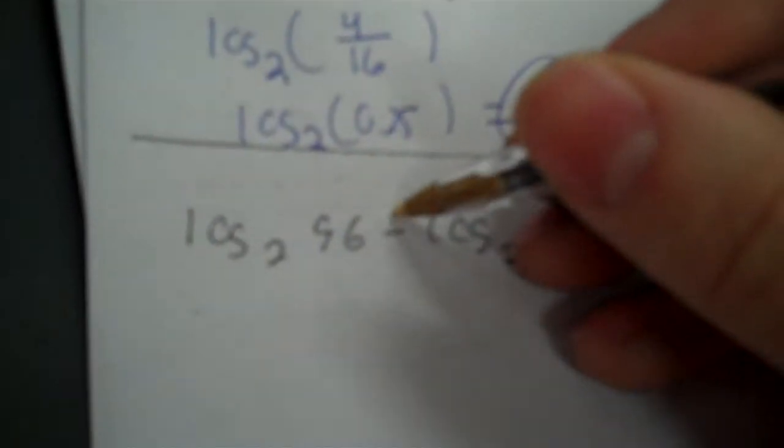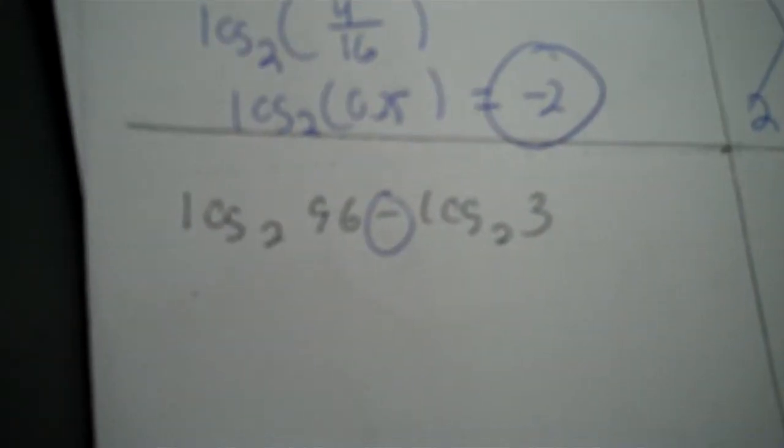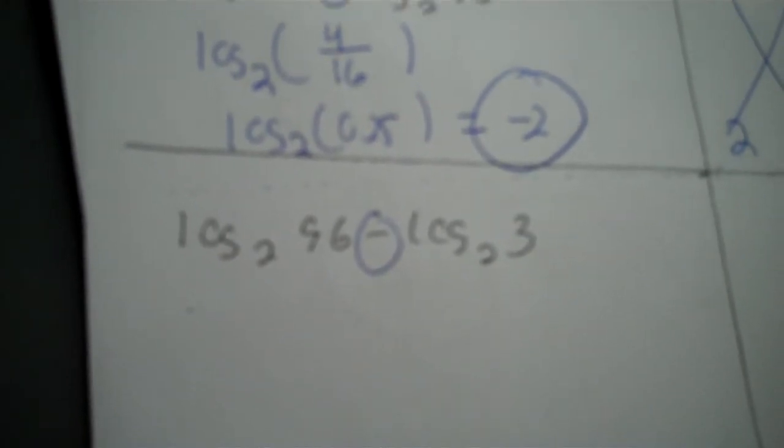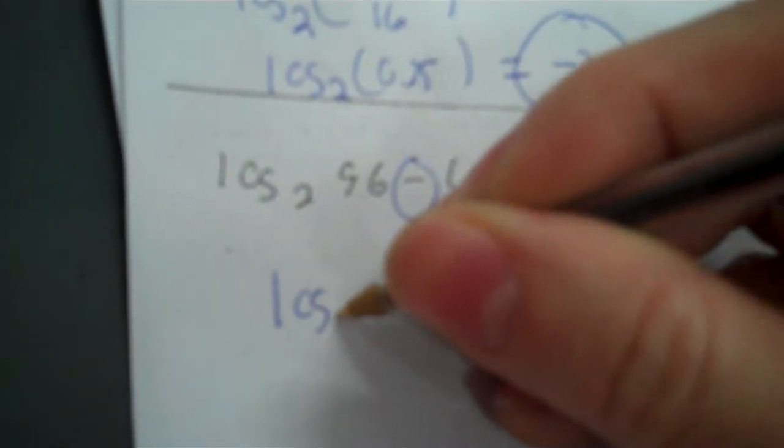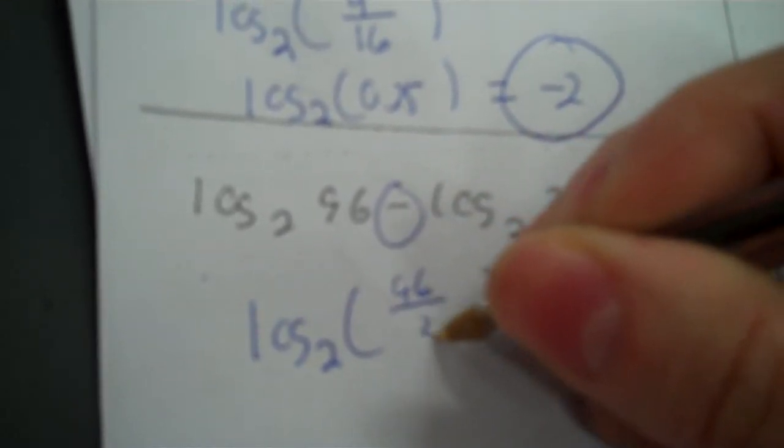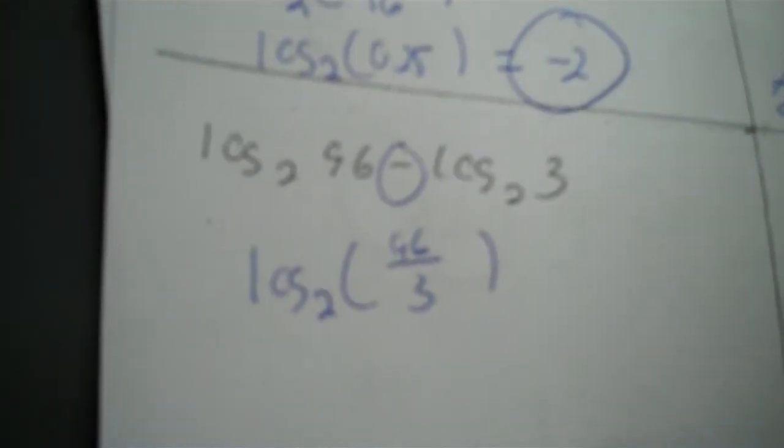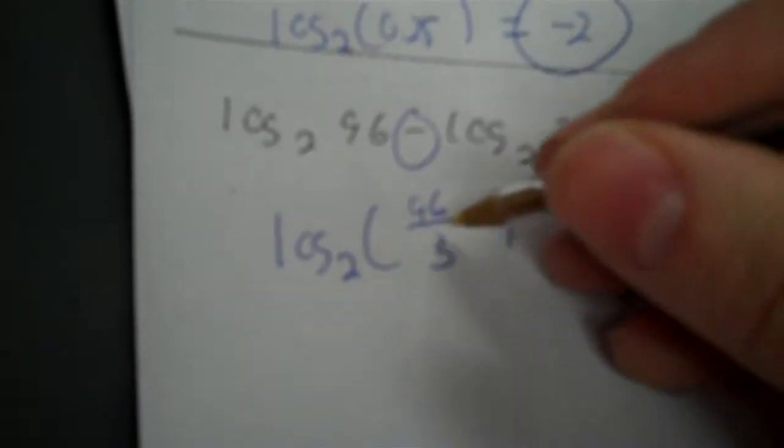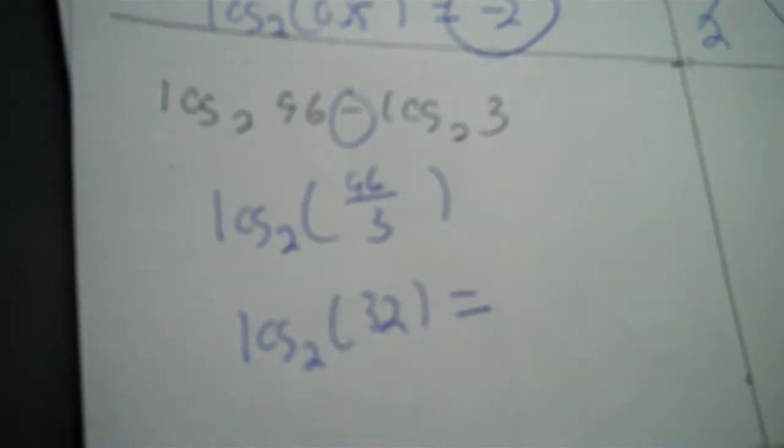Now, we need to circle that minus and condense it. Log base 2 of 96 minus log base 2 of 3. So log base 2, and then minus, we take the 96, divided by the 3. There's no coefficients in front of the log, so no powers. So now I simplify. 96 divided by 3 is 32, and now I'm ready to figure out what it equals.